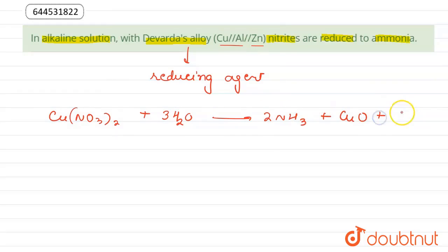plus CuO plus 4O2. Here the oxidation state of nitrogen is changing from plus 5 to minus 3. This